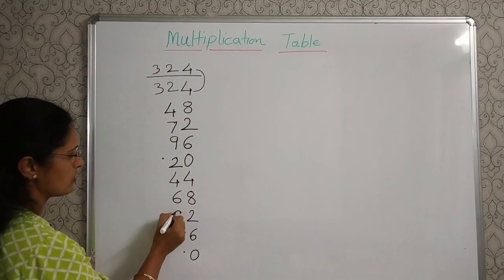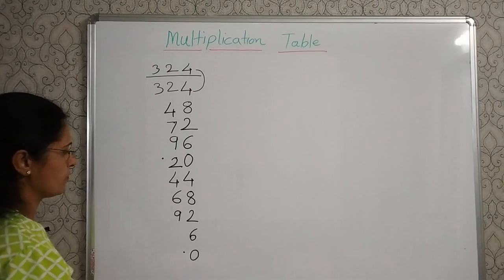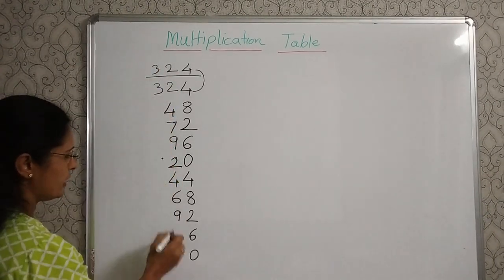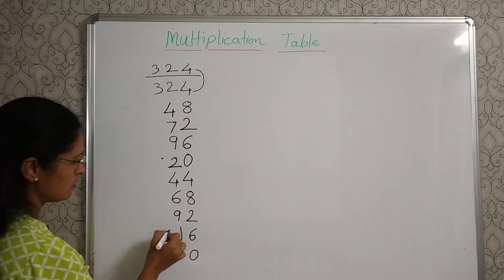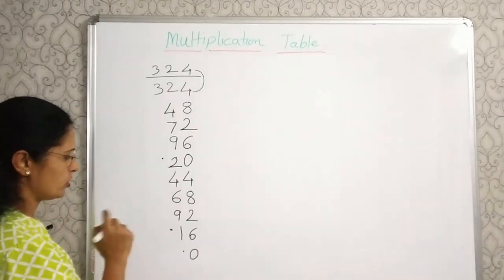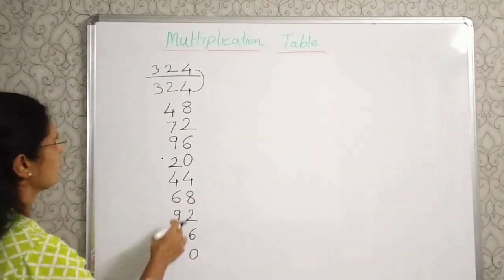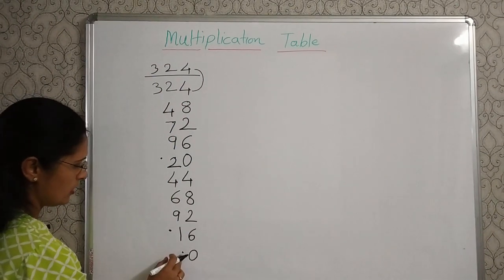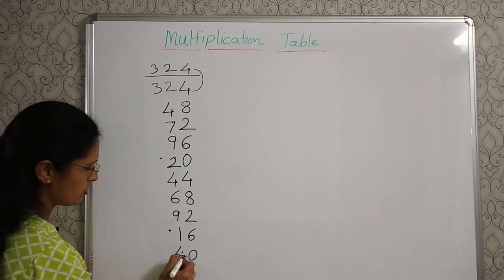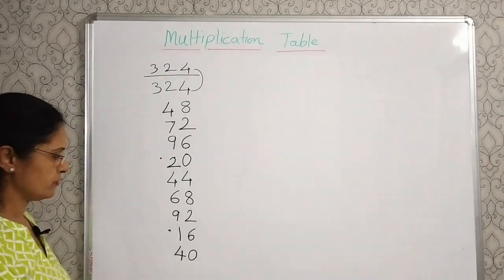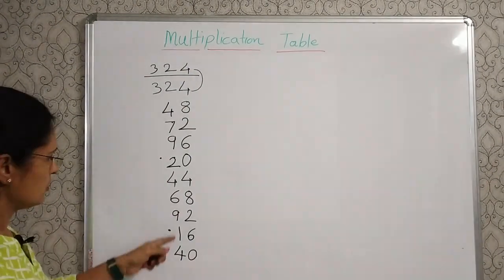And this one, that is 9. 9 plus 2, 11. Write 1 and the one carry over, put a dot for that. Now 1 plus 2, 3, and this one and this one, that is 4. After completing the tens place row we'll start with the hundreds place.